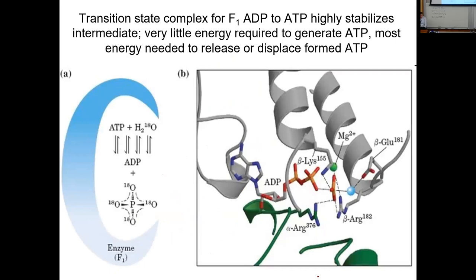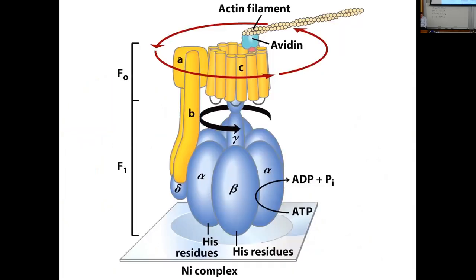This slide simply shows that the beta subunit is able to stabilize the intermediate energy state such that it costs virtually no energy to reform ATP from ADP and inorganic phosphate. The energy expenditure is getting the ATP off — it is the energy required to turn the C cylinder and perhaps for the gamma subunit to displace a copy of ATP from the beta subunit.